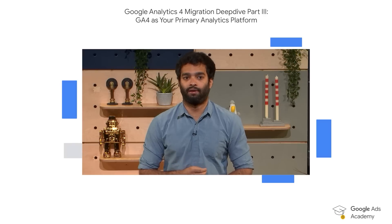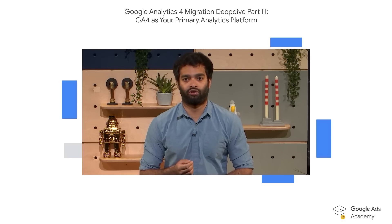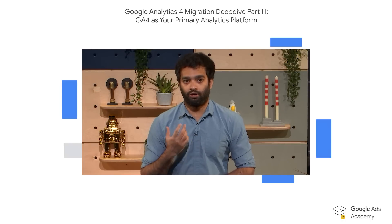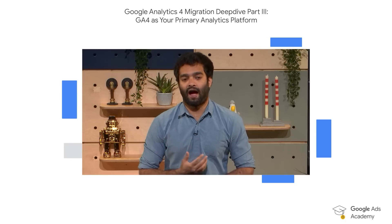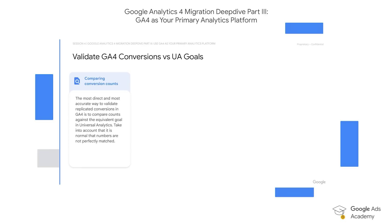Once new conversion actions have been set up in Google Analytics 4, we would recommend validating these new conversion actions against the older conversion actions created in Universal Analytics — to make sure the new GA4 conversion actions have been configured correctly and are tracking the same corresponding events as goals in UA were tracking. Steps to validate include: comparing conversion volumes and conversion values between old UA goals and new GA4 goals. Some minor discrepancies are expected, but we would not recommend proceeding with applying GA4 conversions to smart bidding if there are major discrepancies.